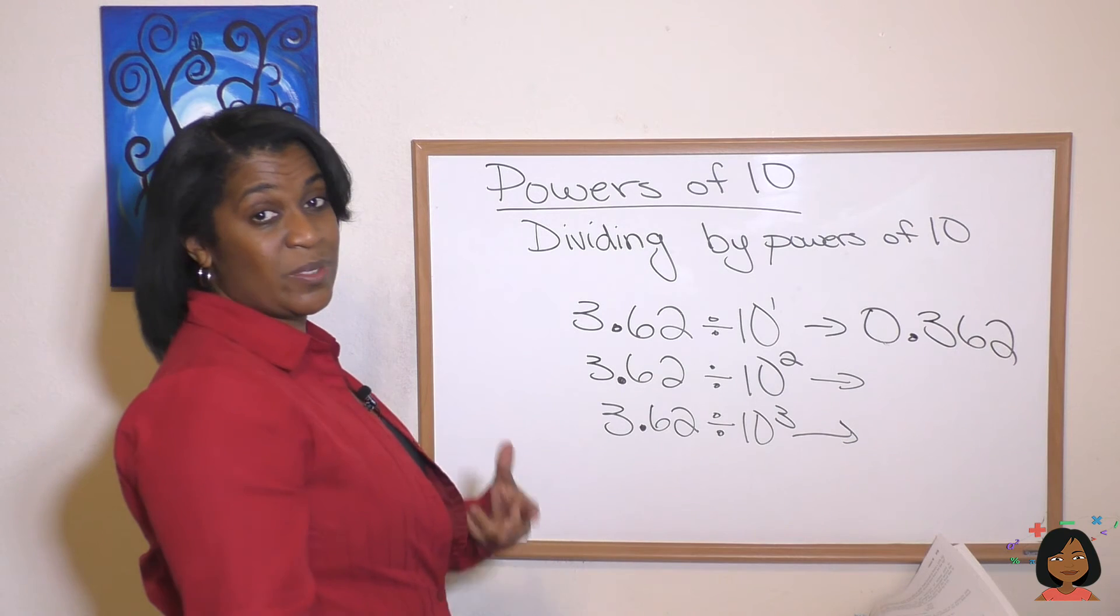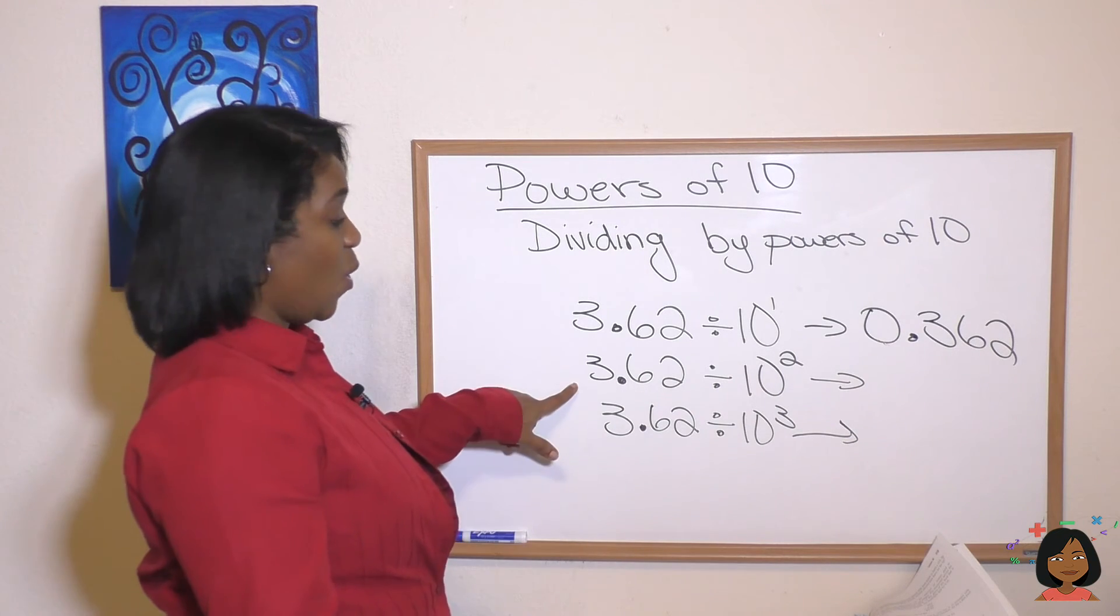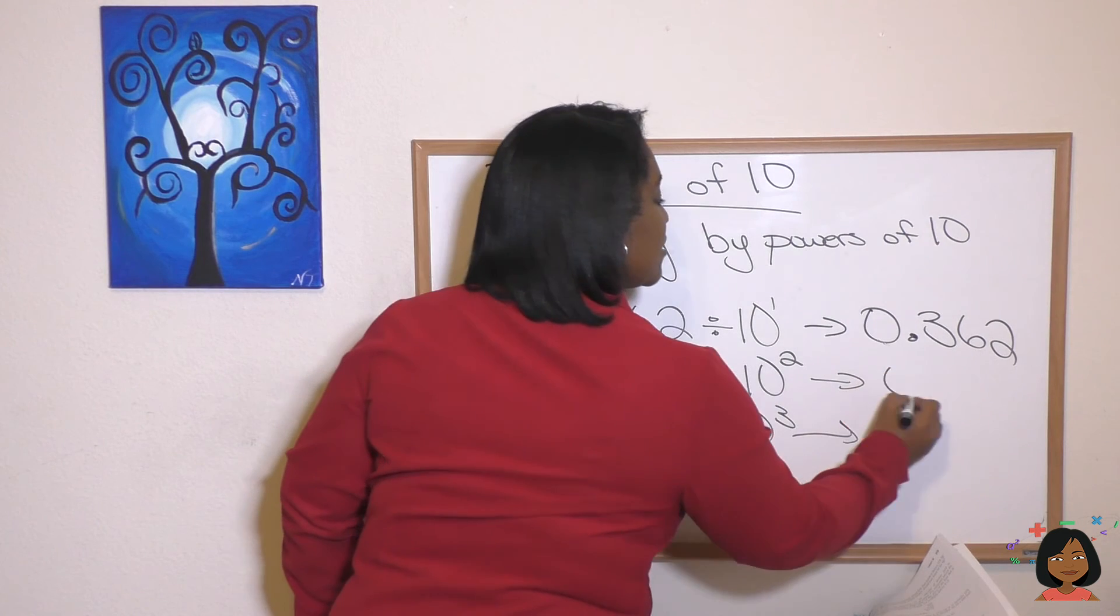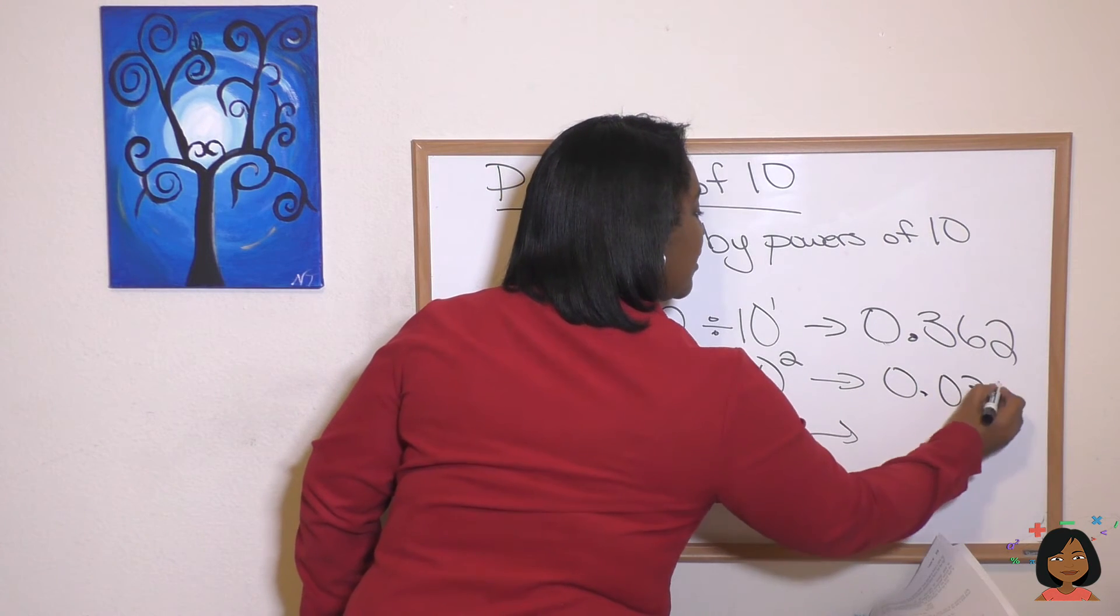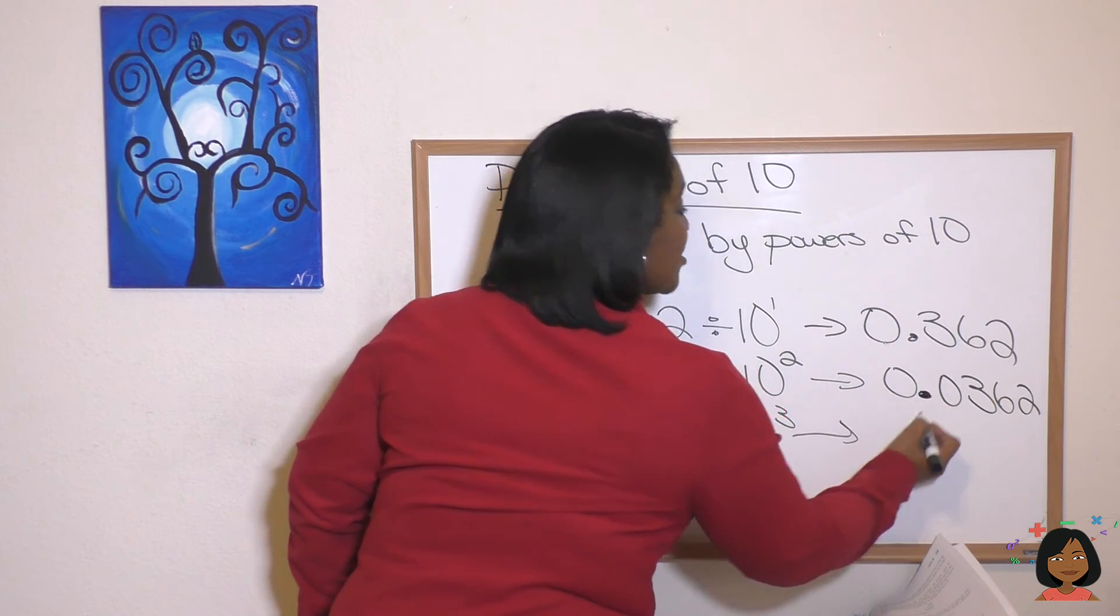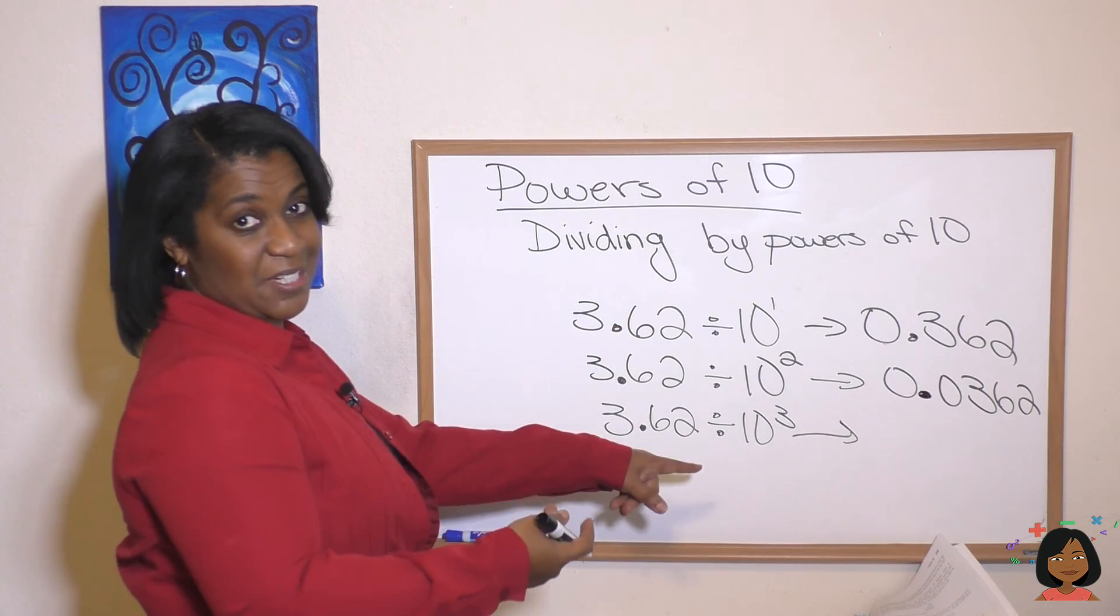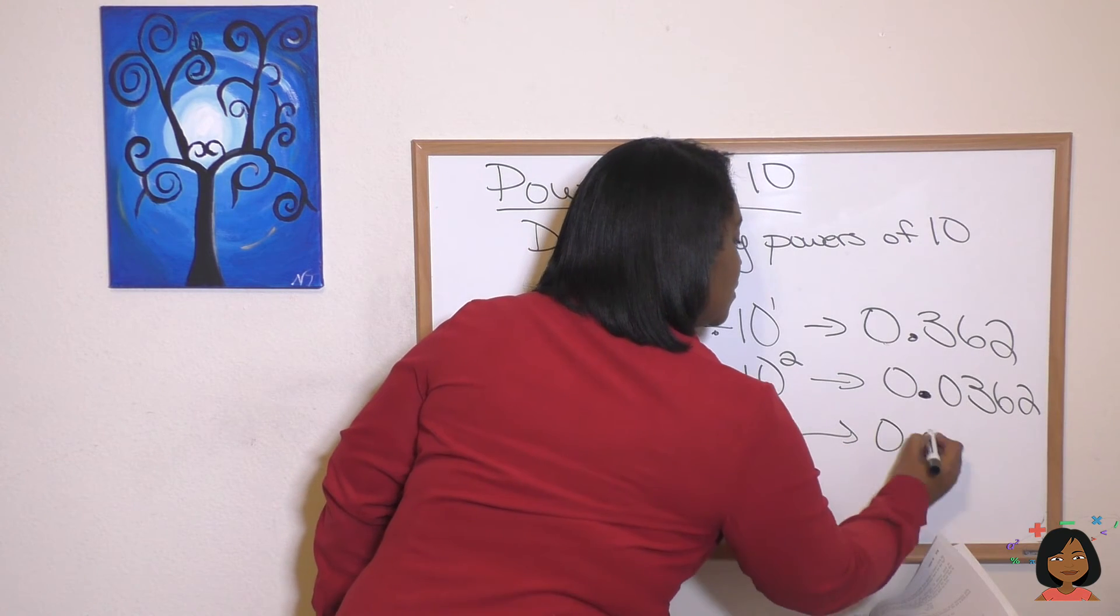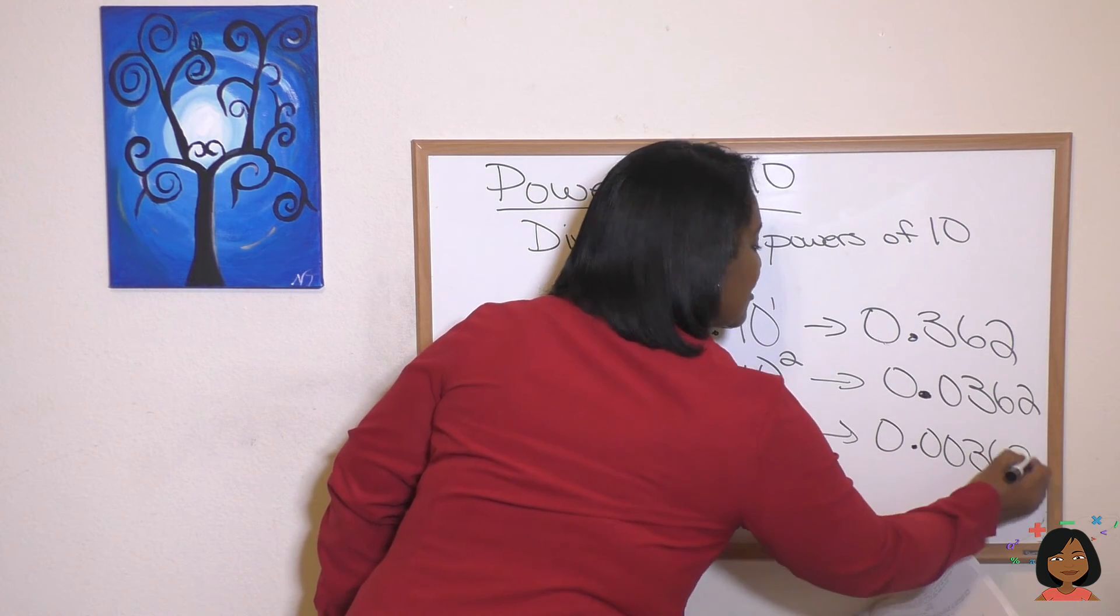And here we've got two zeros in the 10 to the second. We're going to move our decimal point two spaces to the left. Which is 0.0362. And as you can imagine with the three zeros we're going to move our decimal place three spaces to the left. And 0.00362.